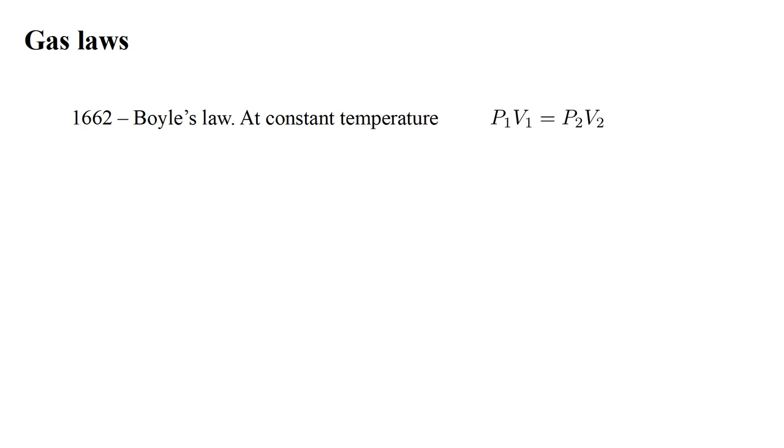If the pressure and volume of a given quantity of gas are in one state P1 and V1, and in a second state P2 and V2, then P1 times V1 equals P2 times V2. Pressure is inversely proportional to volume. If volume increases, pressure decreases so as to keep their product constant.